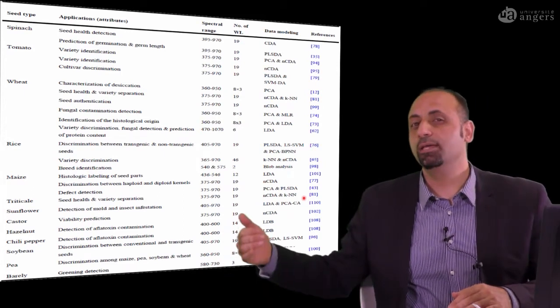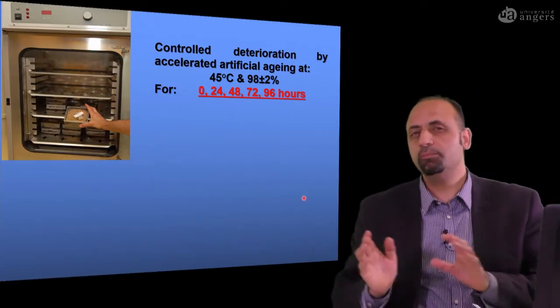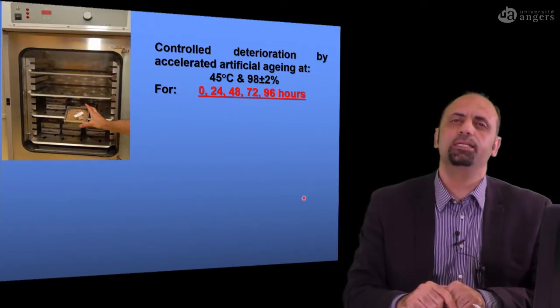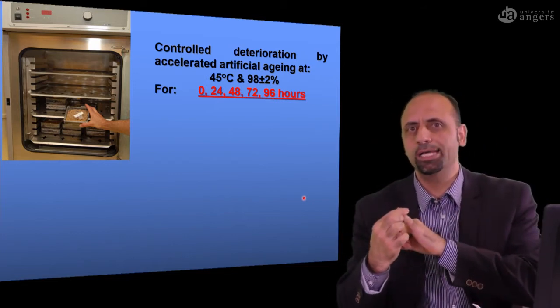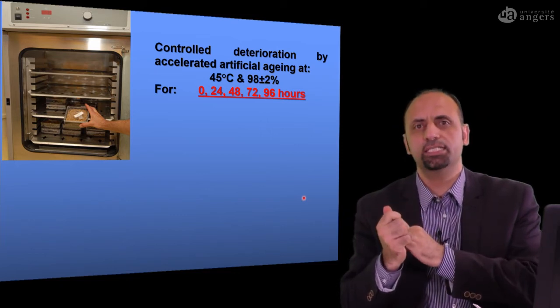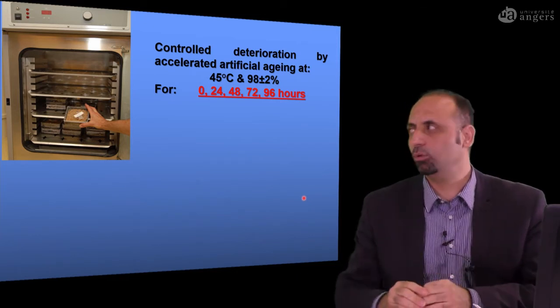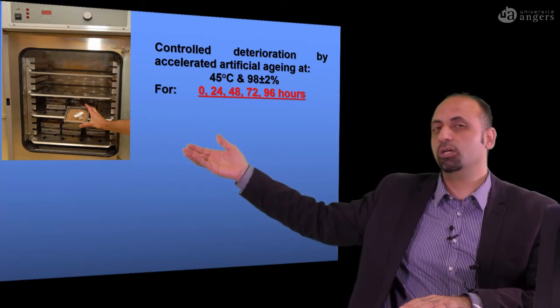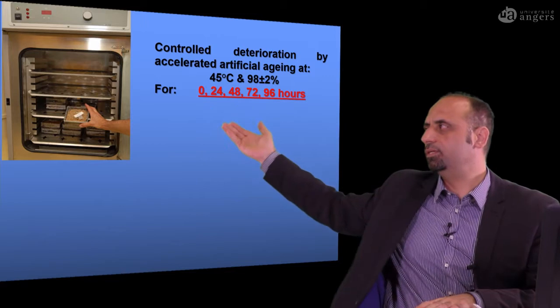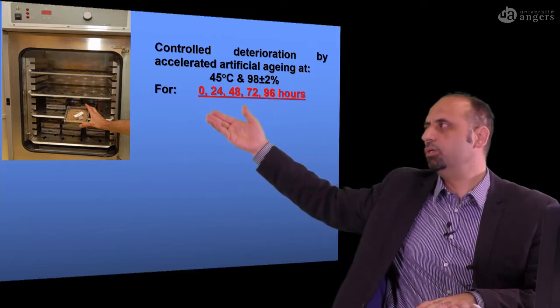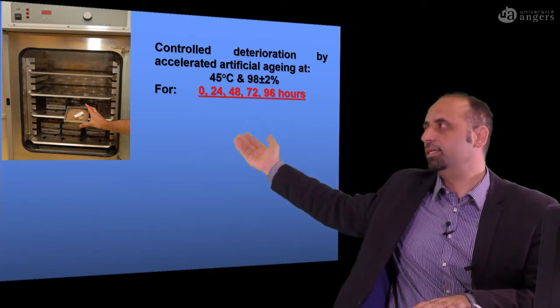We are going to use this technology for cowpea seeds quality evaluation. If you remember the scenario of analyzing multispectral imaging, you need three modules. You need to acquire a high-quality image, extract the data, and build the prediction model. Our data is to try to mimic seeds of different quality. We age the seeds at different stages, starting from zero day, the control, to seeds aged to 96 hours.